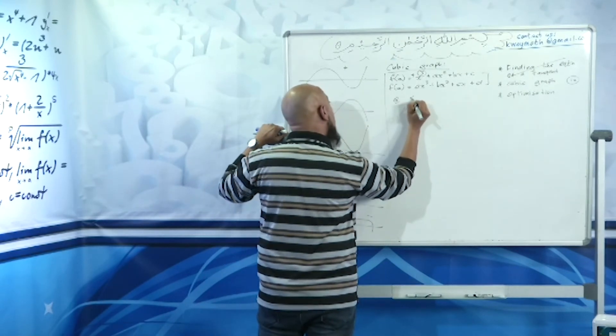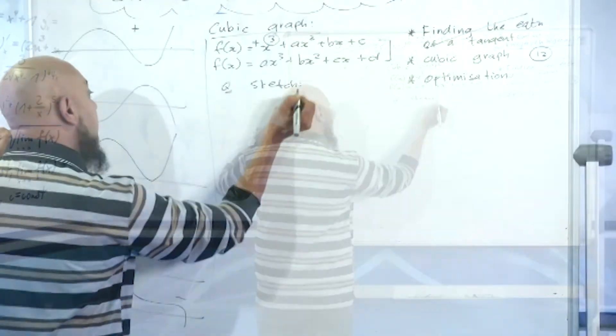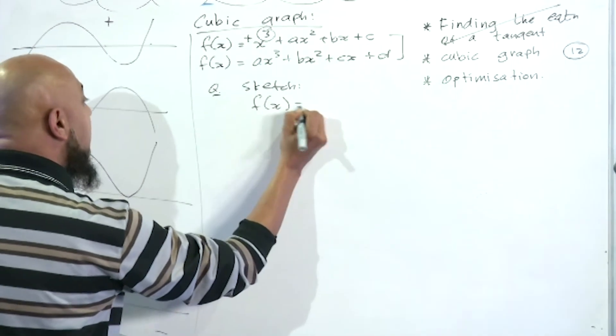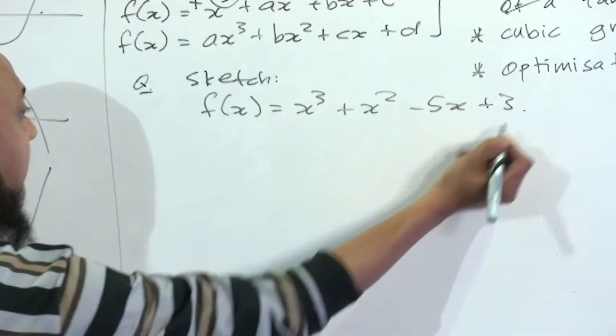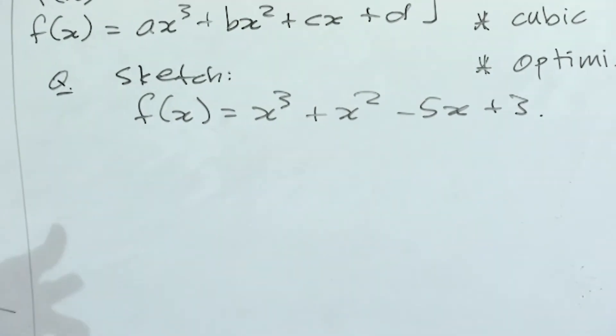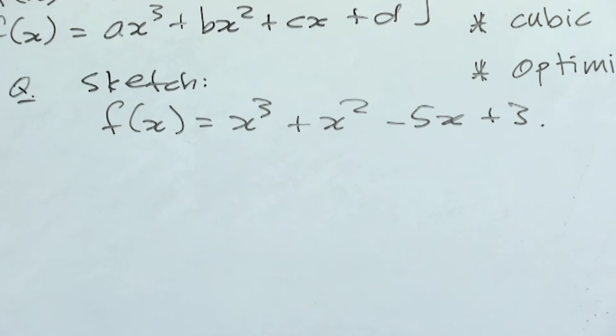I'm going to ask you to sketch the graph: f(x) = x³ + x² - 5x + 3. Go ahead, it's worth 12 marks. Sketch that graph. When we get back, we will do the memo.